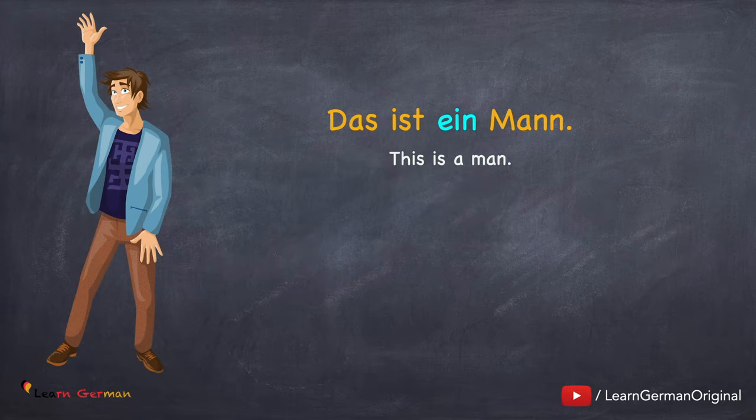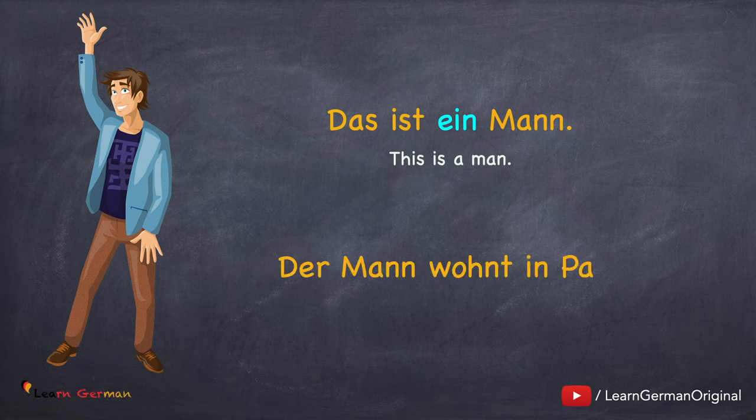Das ist ein Mann. Der Mann wohnt in Paris. The definite article der, just as the name suggests, is talking about a particular person — the man. That's why these articles are definite, whereas in the case of indefinite articles, just as the name suggests, we are not talking about a particular man but just a man.